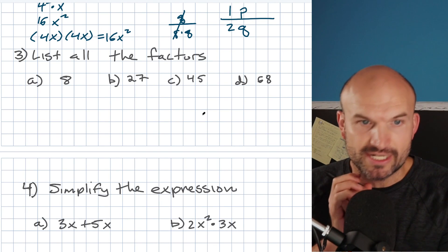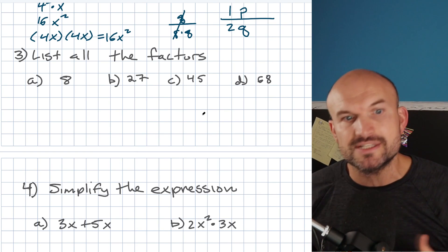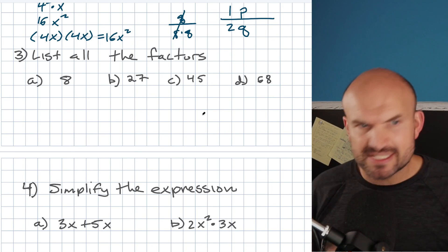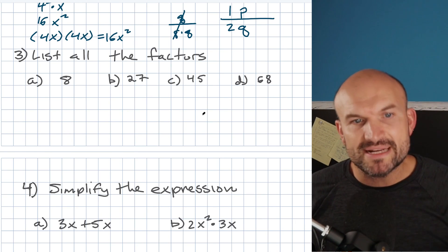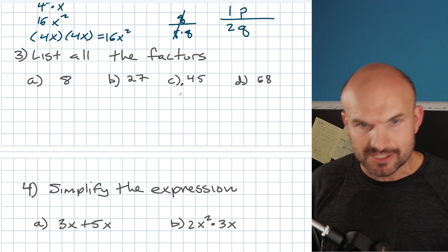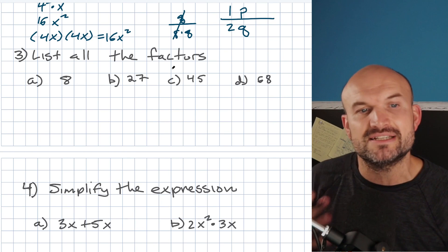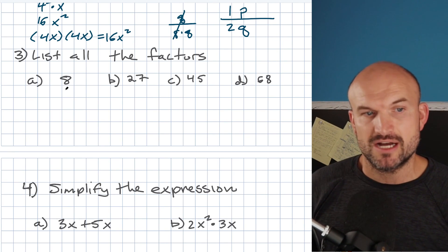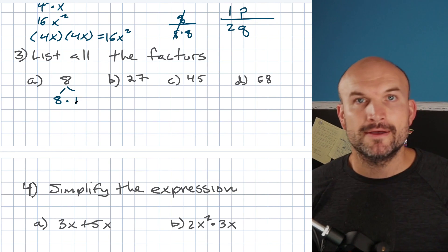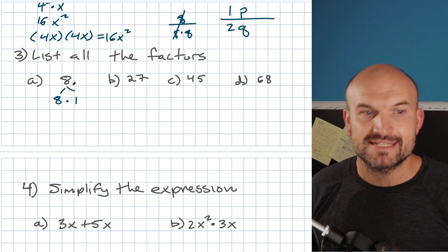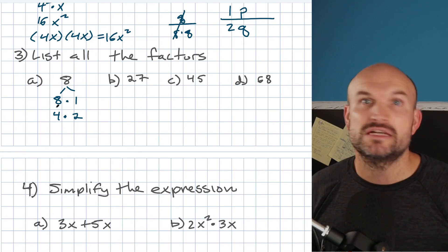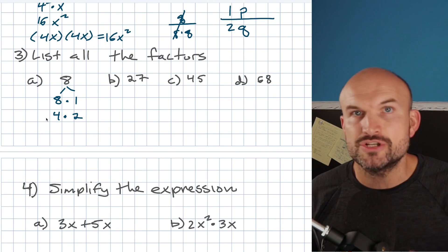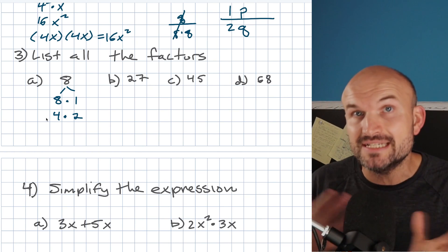Understanding factors of numbers is extremely important for factoring expressions. Factors are numbers that evenly divide into a given number, or can be multiplied by another number to produce it. For eight, we always start with the number times one — so eight times one. Then we think about what other pairs multiply to give us eight: four times two. So the complete list of factors of eight is eight, four, two, and one.